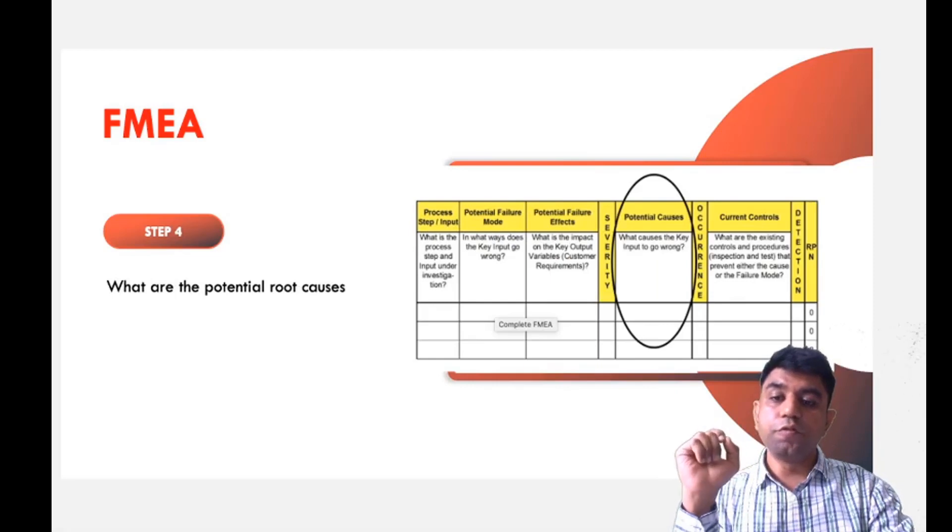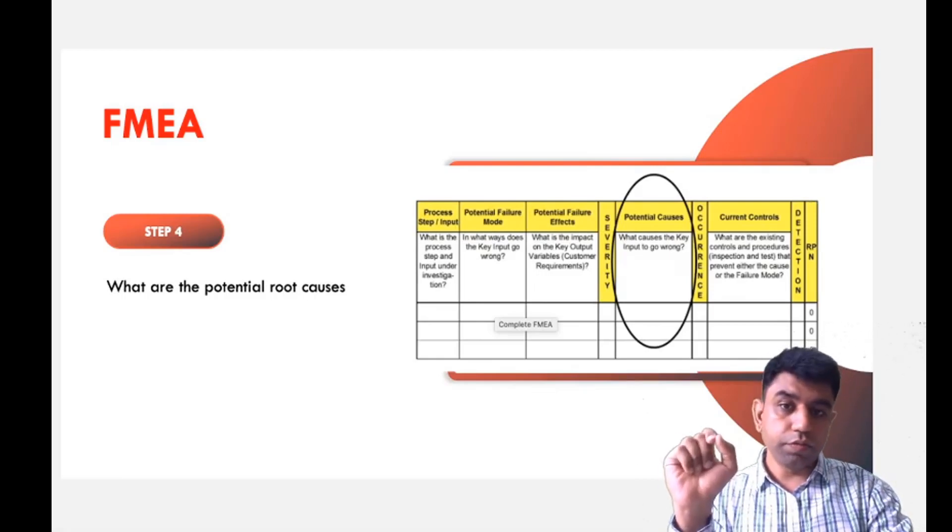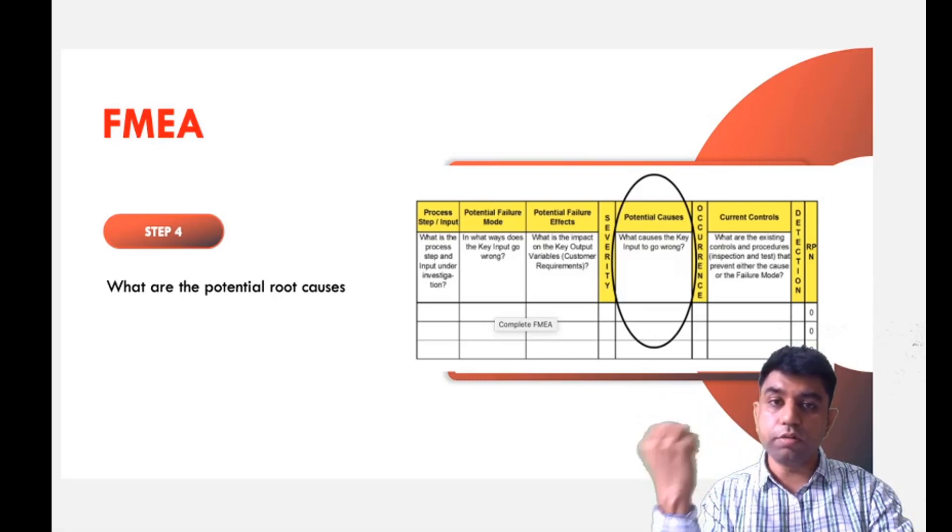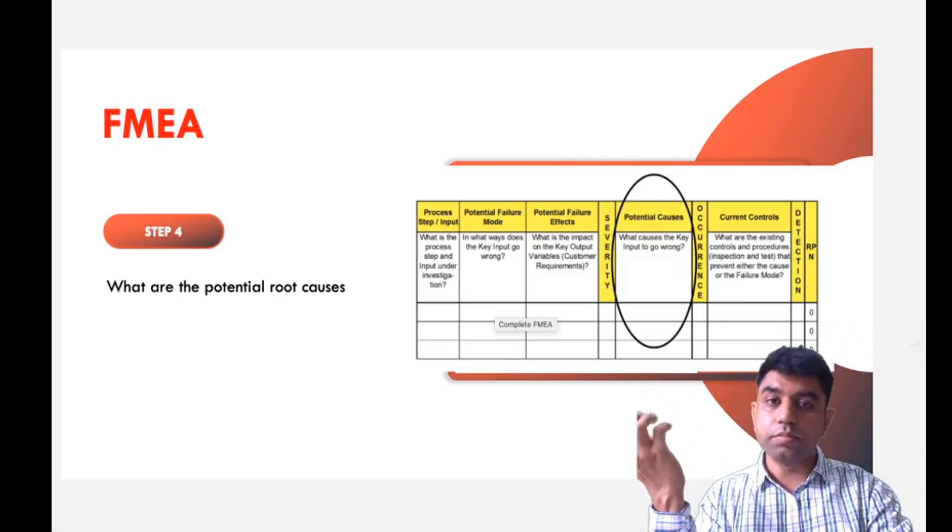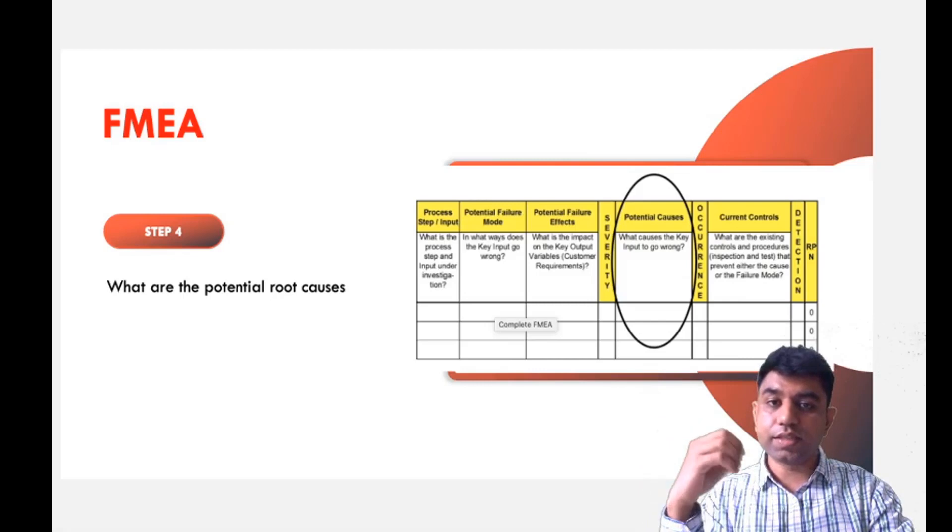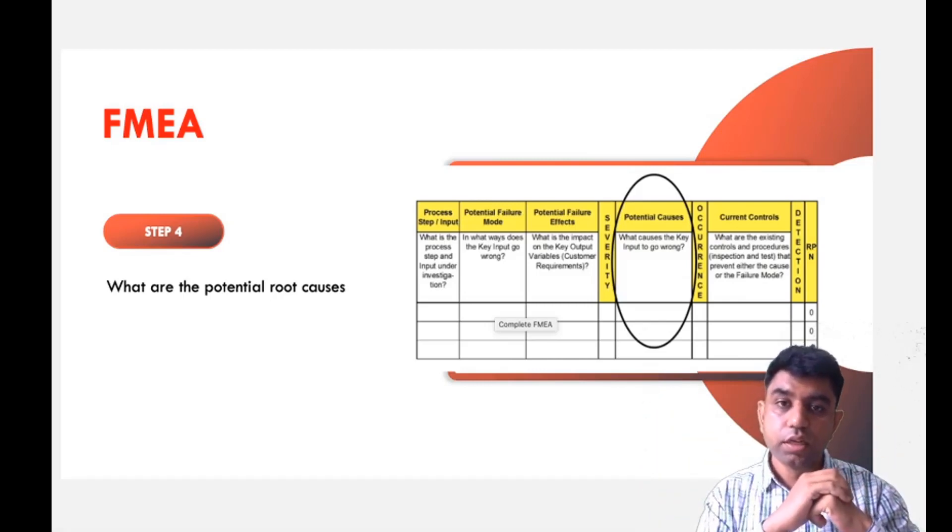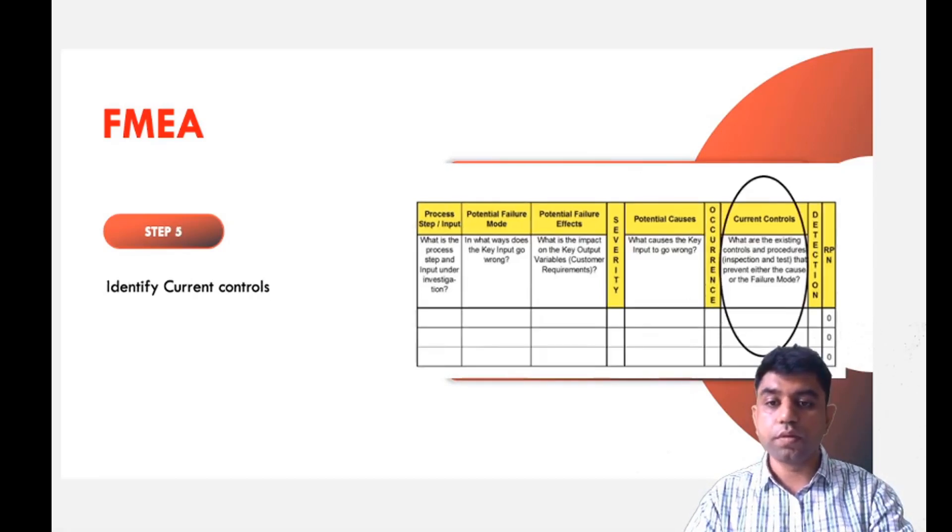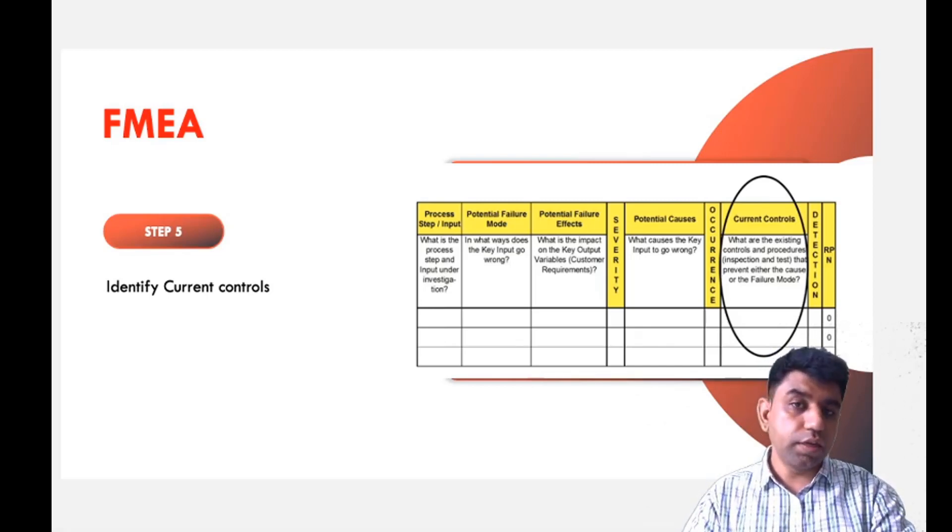In the fourth step, we write about the potential root causes. What causes the key input to go wrong? For example, porosity may happen in casting. What are the different reasons for porosity? The primary reasons we know are inefficient or insufficient venting. If gases cannot evacuate while the component is solidifying, porosity happens. In the fifth step, we identify current controls. In order to avoid porosity in casting, we need to provide proper venting.